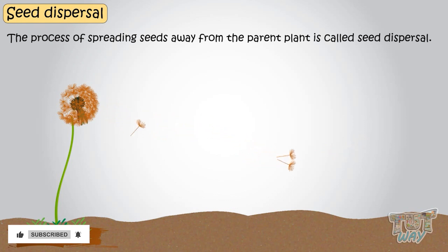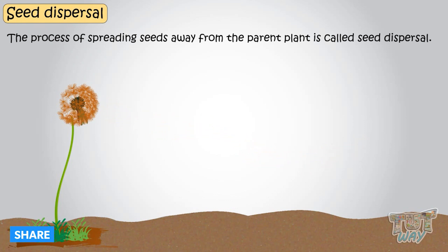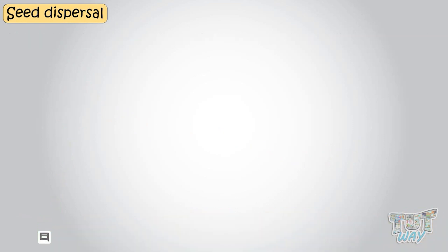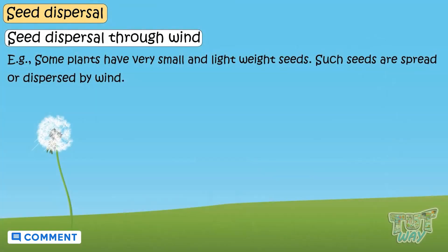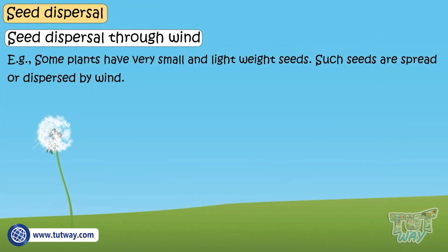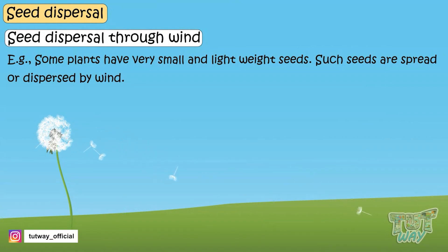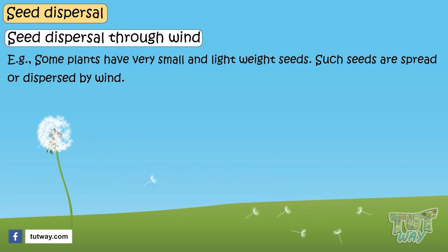This process of spreading seeds away from the parent plant is called seed dispersal. There are many means of seed dispersal. Let's learn about them. Wind: some plants have very small and lightweight seeds, and such seeds are spread or dispersed by wind. Small and light seeds fly away with the wind to distant places.